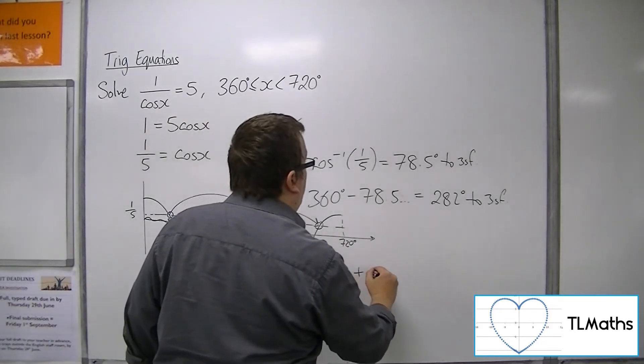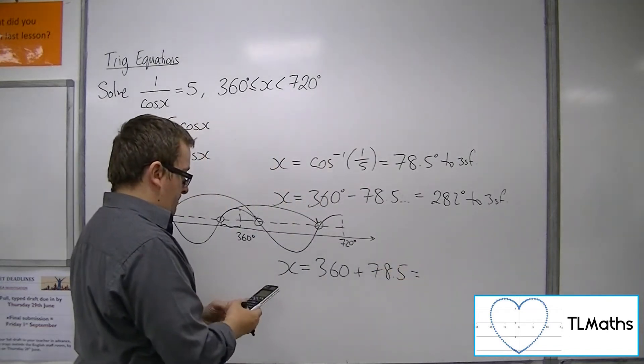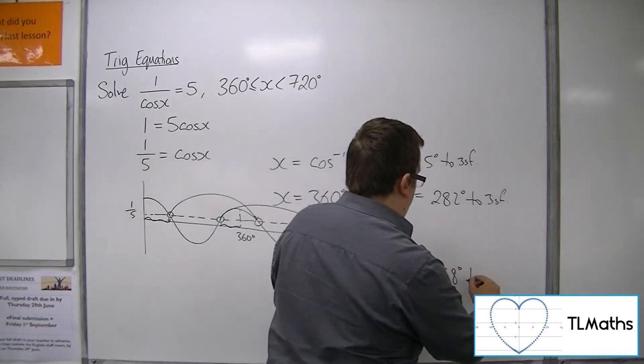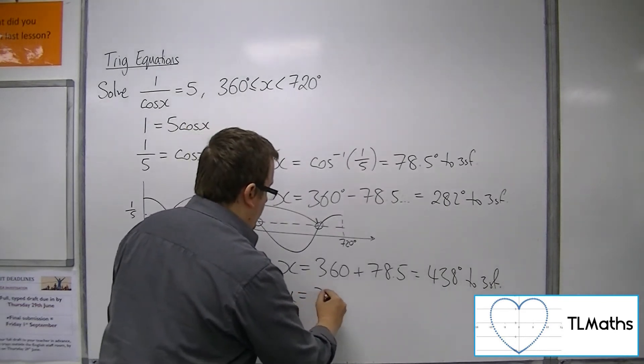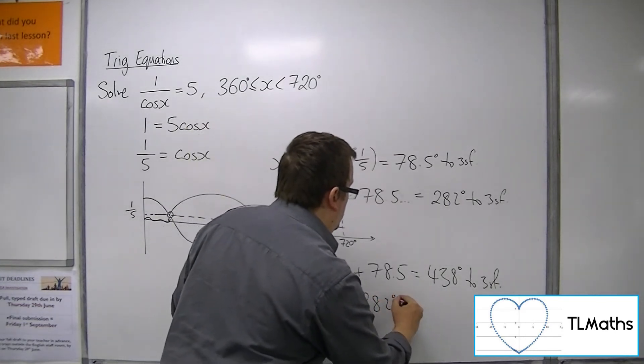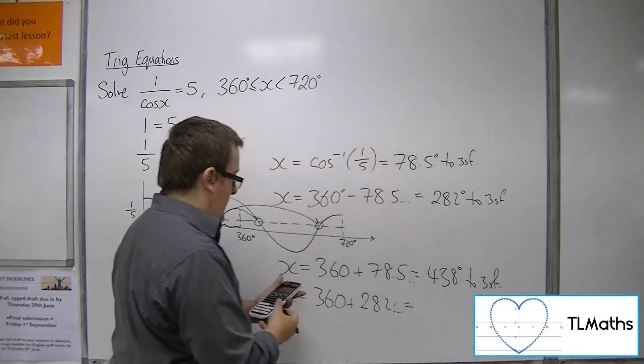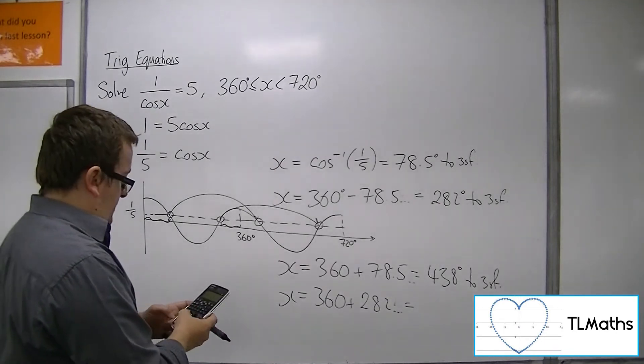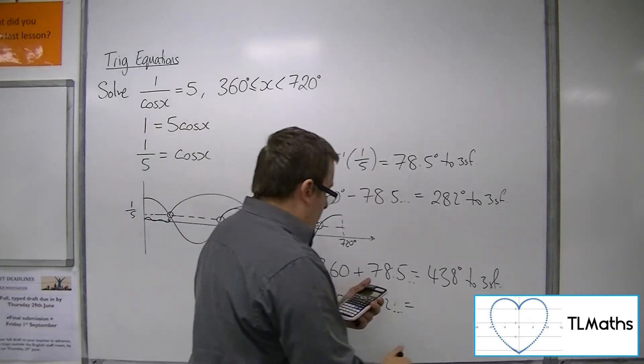So, 360 plus the 78.5 gets me to 438 degrees to 3 sig fig. And if I add 360 onto the 282. Okay, so let's get back to that.